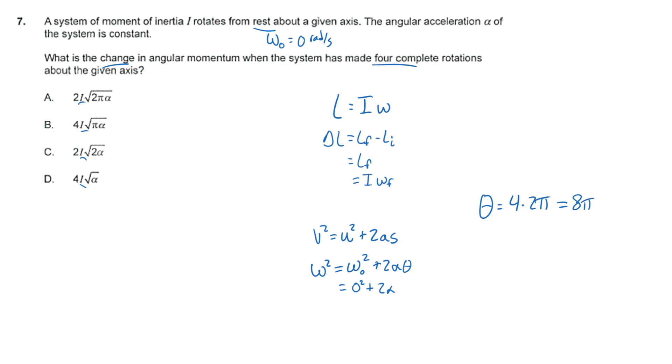So we have omega squared equal to two alpha times eight pi. So let's solve for omega. Omega is equal to the square root of 16 pi times alpha, which we can write as four times the square root of pi times alpha. And then this is our final angular velocity.